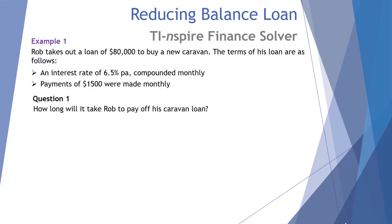Example one: Rob takes out a loan of $80,000 to buy a new caravan. The terms of his loan are an interest rate of 6.5% per annum compounded monthly, and payments of $1,500 made monthly. Our first question: how long will it take Rob to pay off his caravan loan?